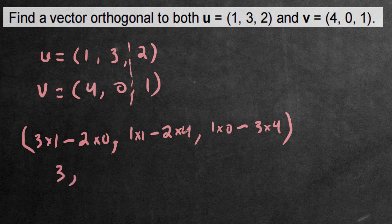1 times 1 is 1. This over here is an 8, a negative 8. So this would be negative 7 for the middle coordinate. Over here, 1 times 0 is 0, 3 times 4. Negative 3 times 4 is negative 12. And negative 12 is the last coordinate.